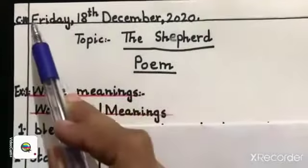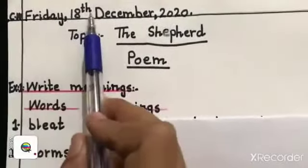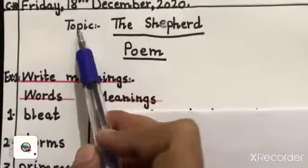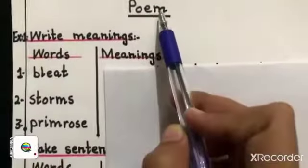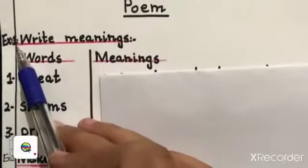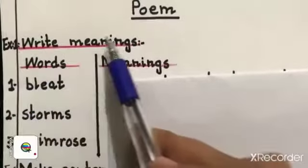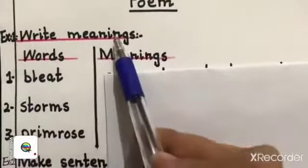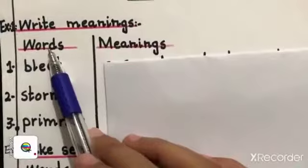On your notebook page you will mention CW, date. Then you have to write your topic. Your topic is the shepherd that is a poem. Then you have to mention exercise number one. Write meaning, put hyphen, underline your question.